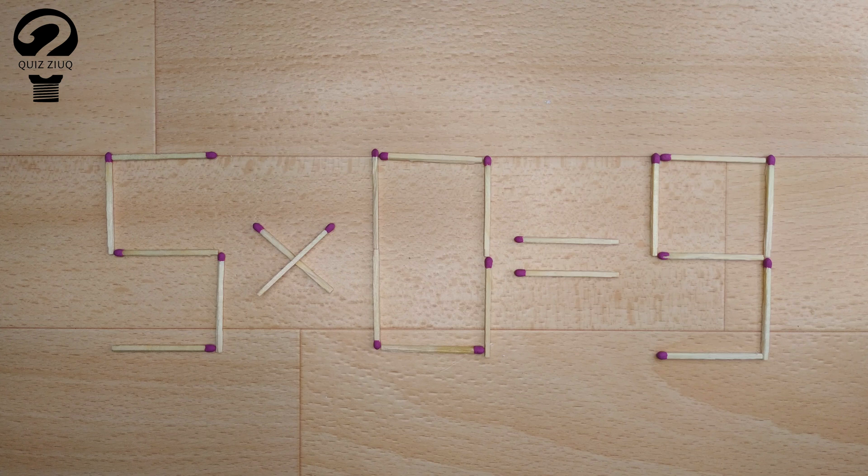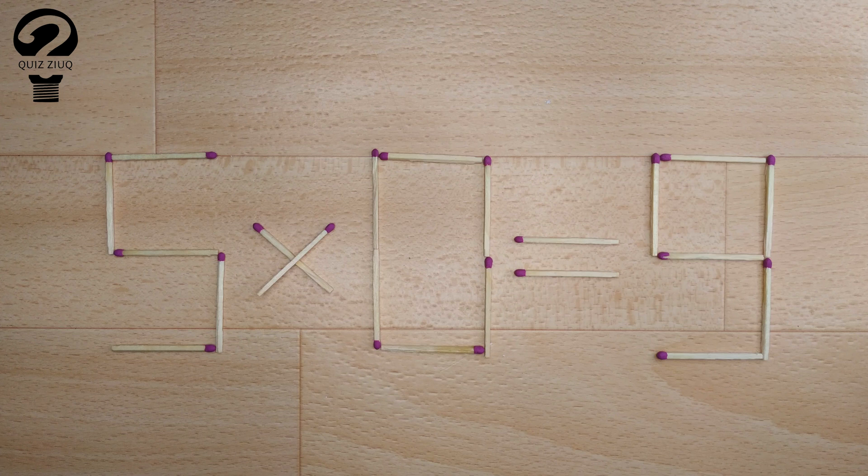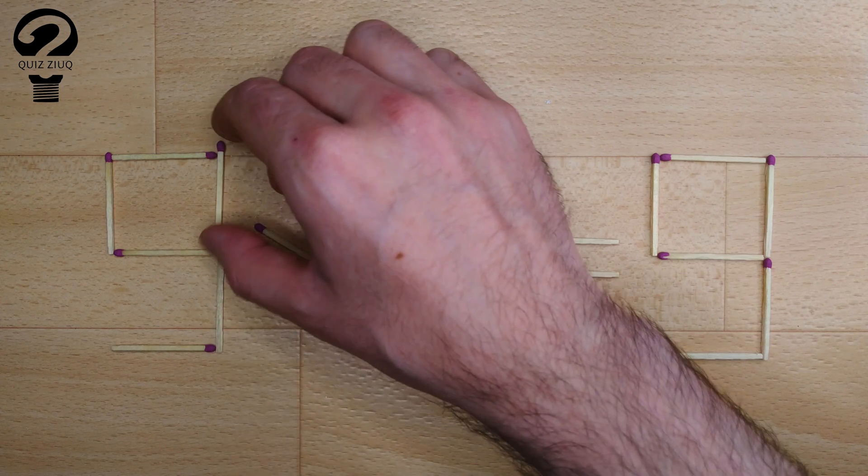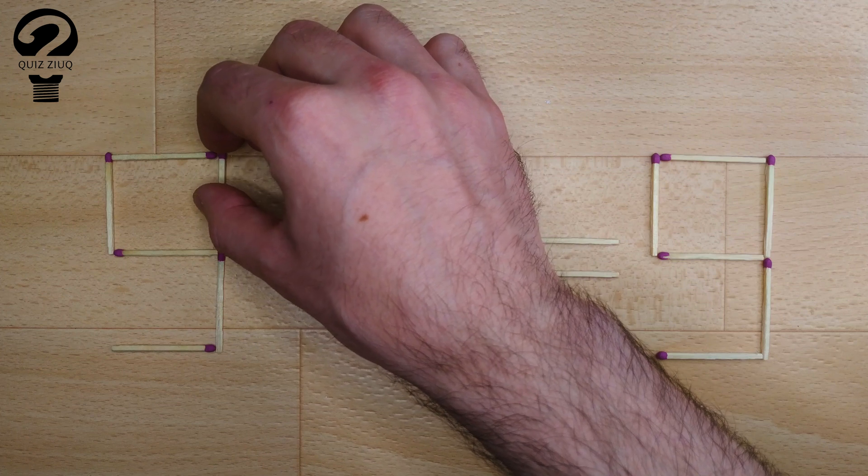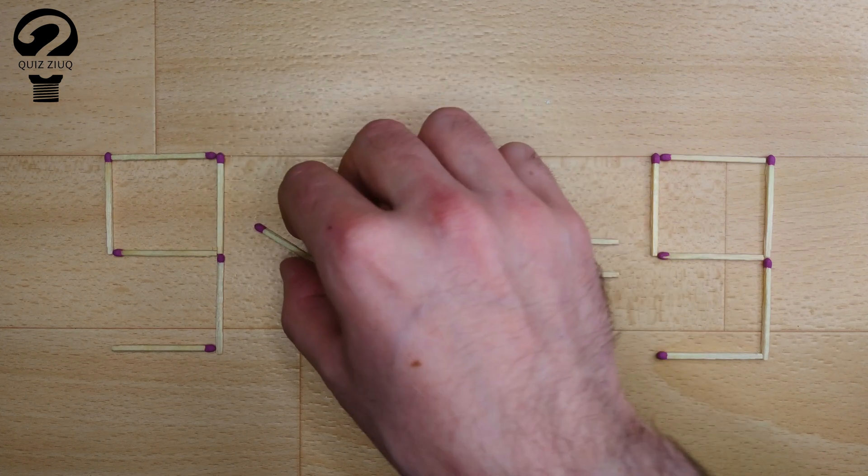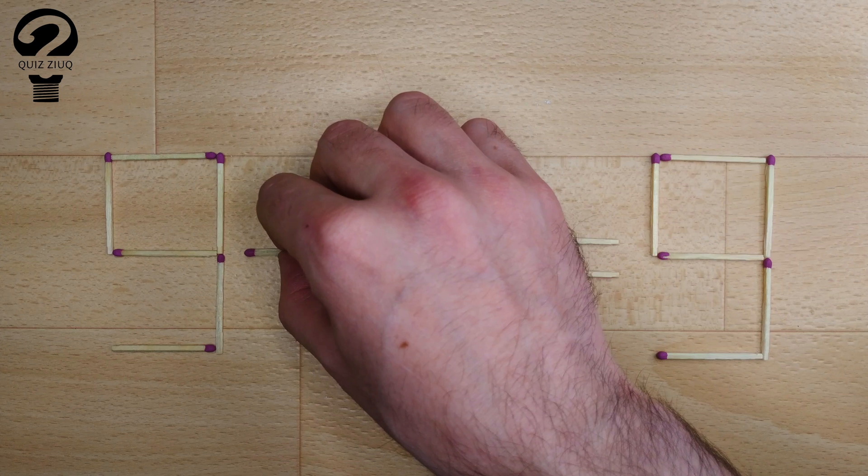How is this puzzle solved? For this, we just need to move two matches. And now, when we check the condition, nine minus zero equals nine. Nine equals nine.